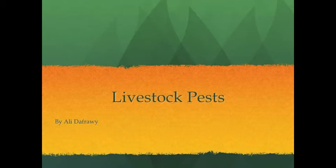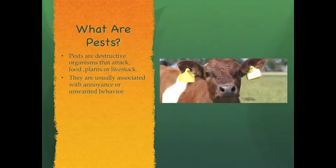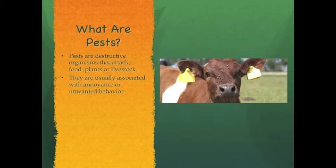Good afternoon everyone. Today I'll be discussing livestock pests and their effect on animals and cattle. First, let us identify what pests are. Pests are destructive organisms — they could be plant or animal — that attack food, plants, or livestock. They are usually associated with annoyance or unwanted behavior. In this presentation we will be discussing the effect of pests on livestock and what kind of annoyances and disturbances they cause to livestock organisms.